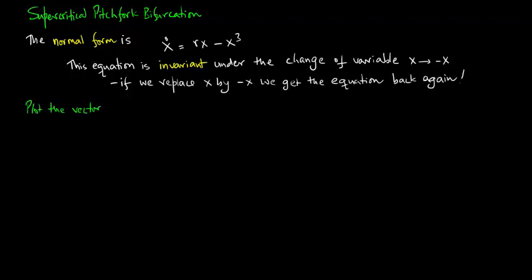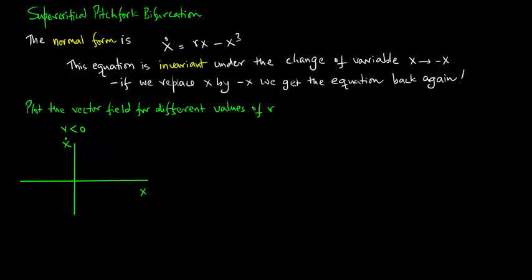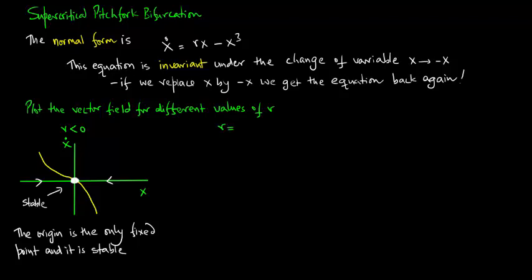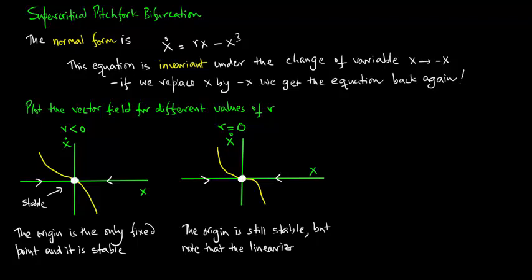What that means is if we replace x by minus x we get the equation back again. Let us plot the vector field for different values of r. For r less than zero we plot x dot versus x. We find that we have a stable fixed point. The origin is the only fixed point and it is stable. Now consider r equals zero. We again have only one stable fixed point.